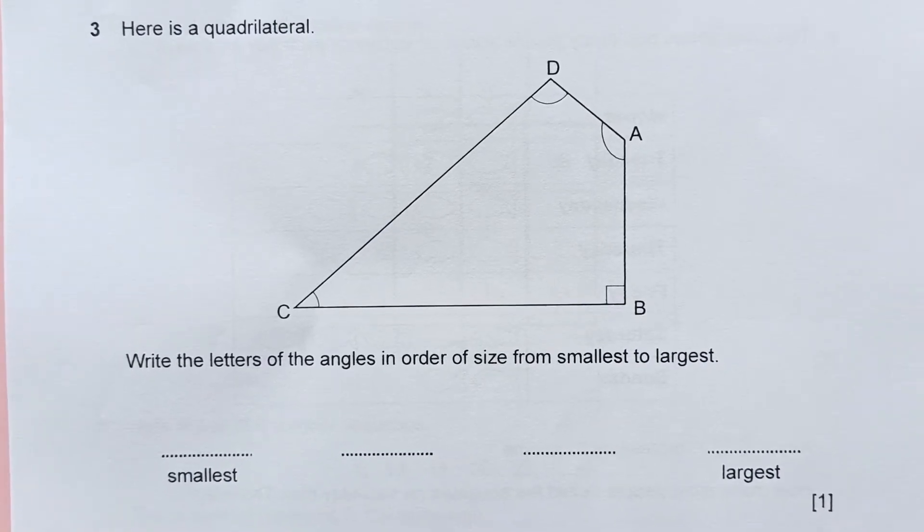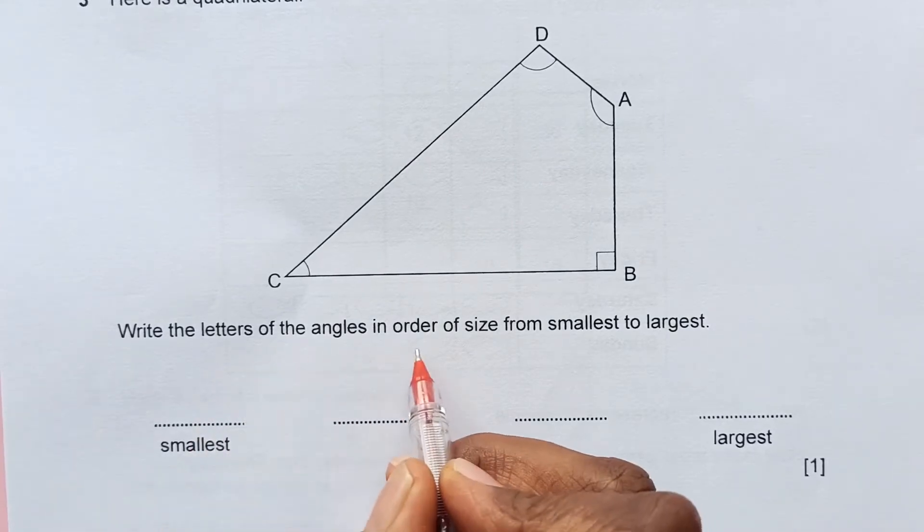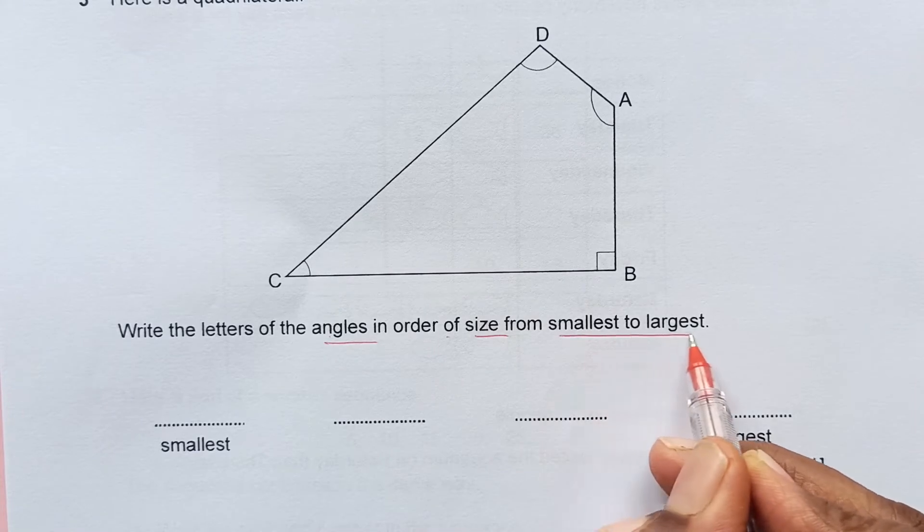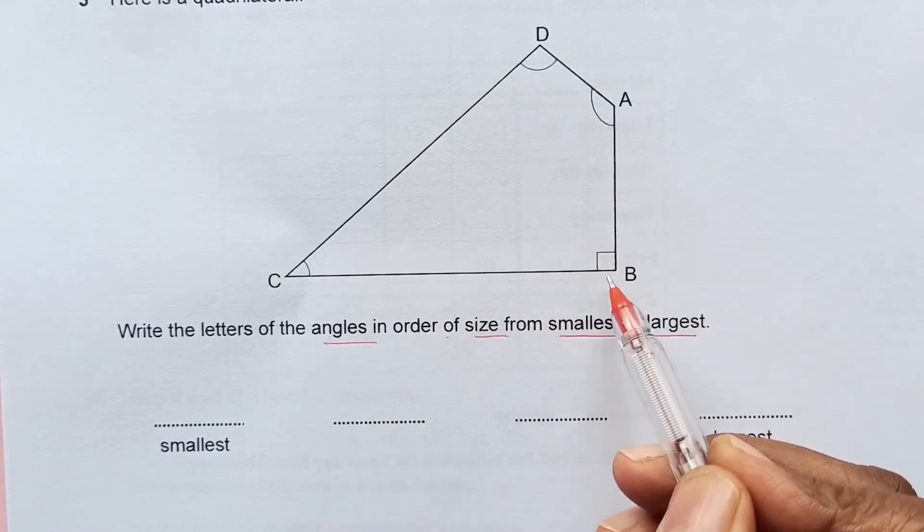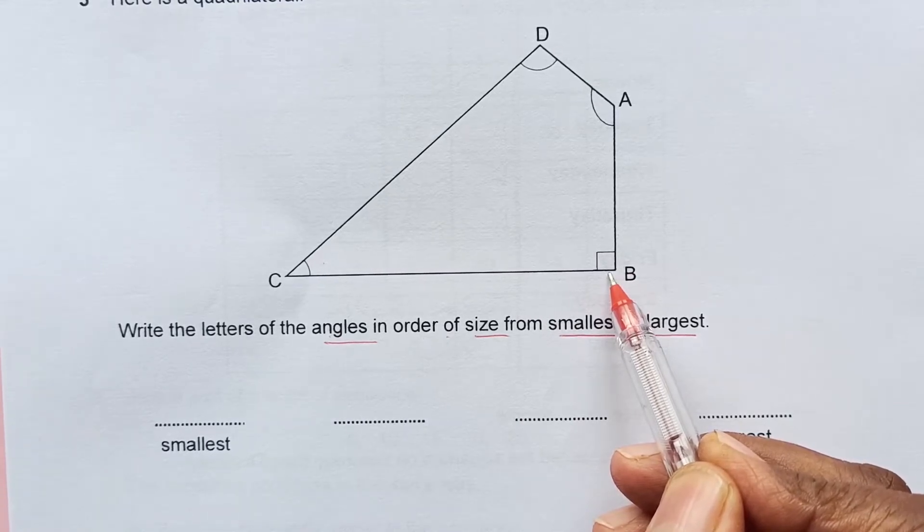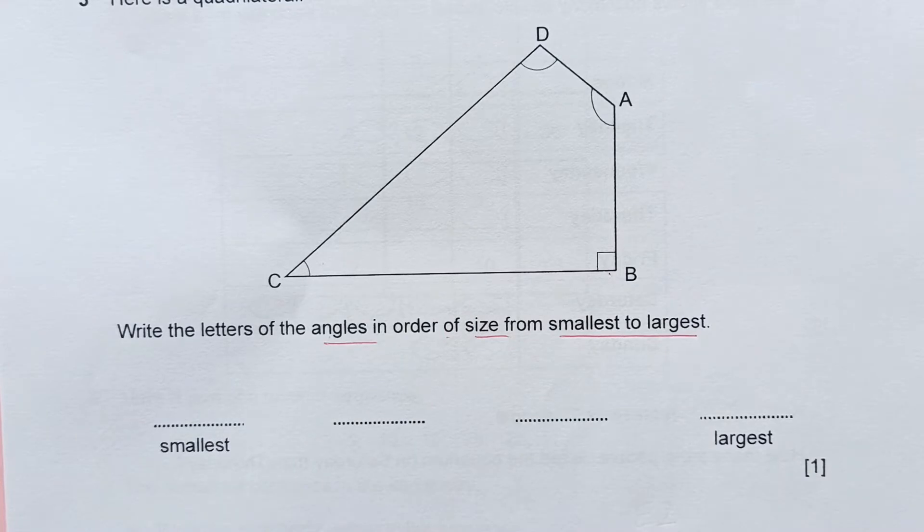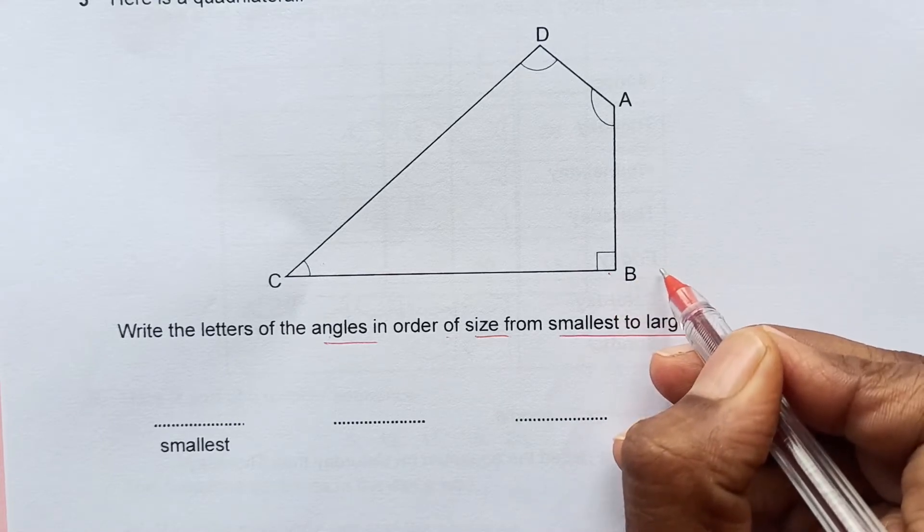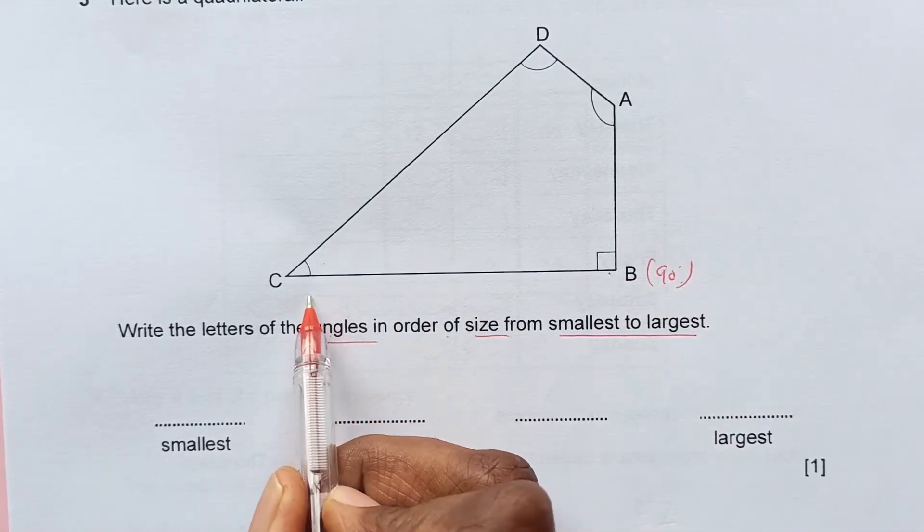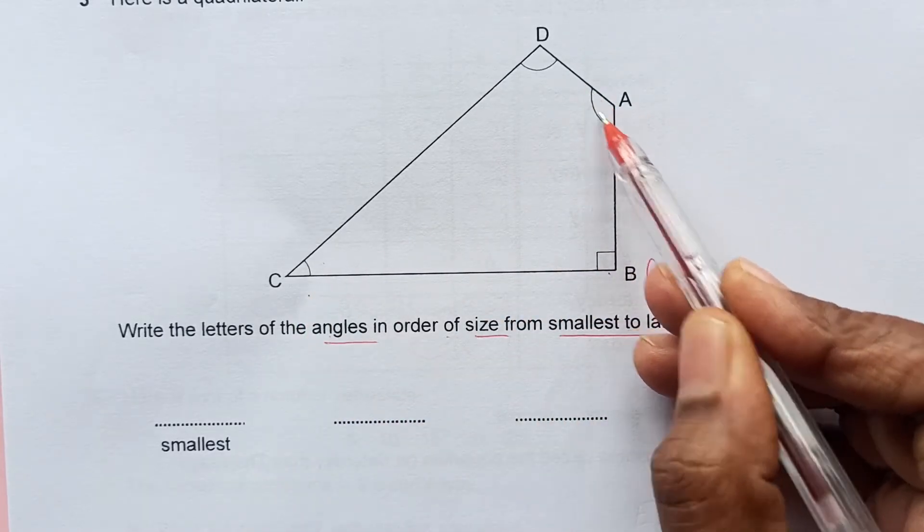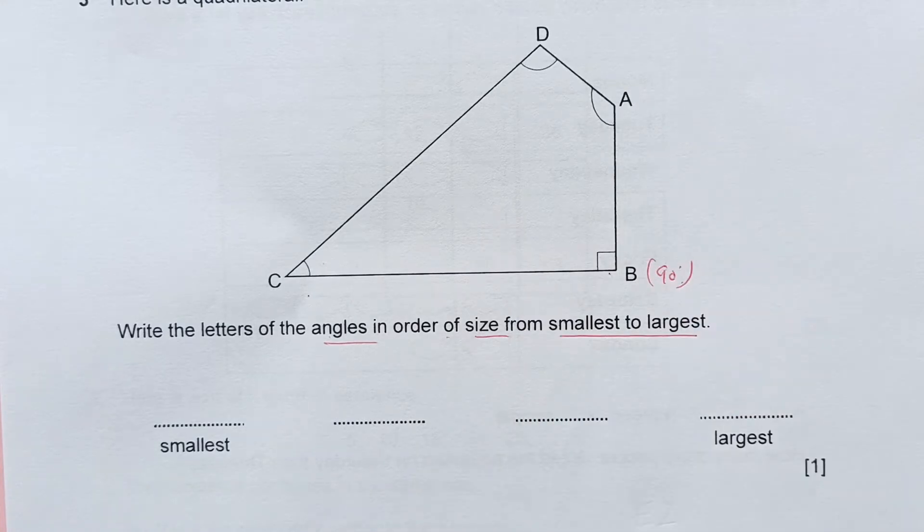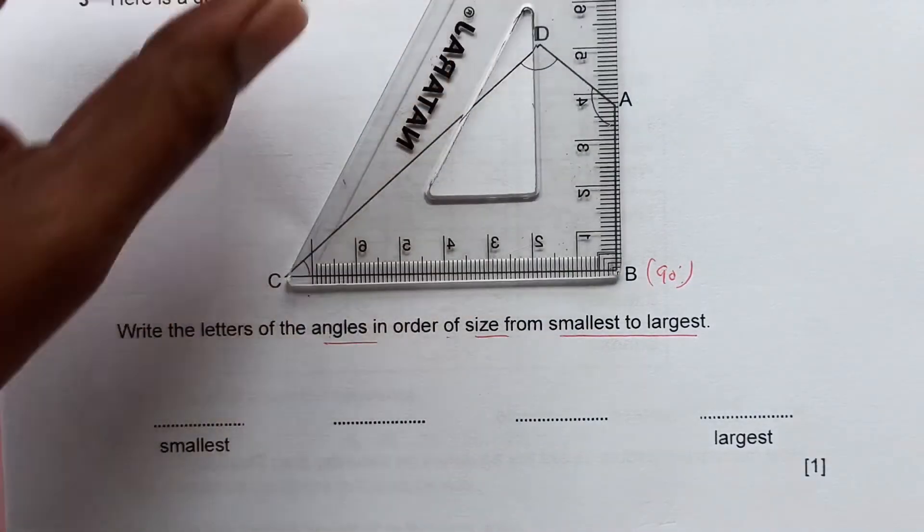Now number 3. Here is a quadrilateral. Write the letter of the angles in order of size from smallest to largest. We have the angles but the measurement is not given, so we need to recognize them. We need to estimate. You see we are given this is 90 degrees. Less than 90 is an acute angle. This is less than 90 and this is greater than 90.